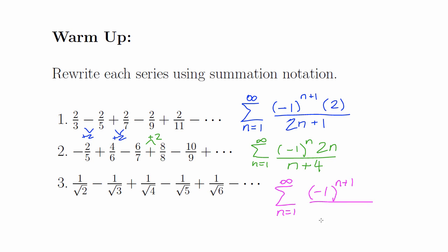In the denominator, we have the square root of something in every term, and those numbers are increasing by 1. So it is n, and when I plug in my first n value of 1, I want to get 2, so I adjust it by adding 1.